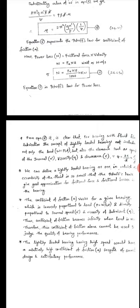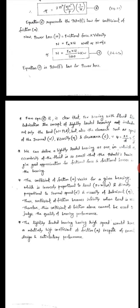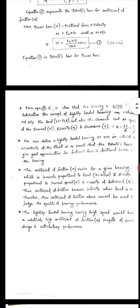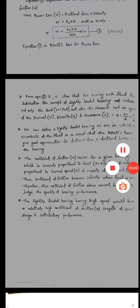Coefficient of friction mu varies for one bearing, which is inversely proportional to the load and directly proportional to the journal bearing speed N dash and viscosity of lubricant. This coefficient of friction becomes infinity when the load is zero, therefore this coefficient of friction alone cannot be used to judge the quality of bearing performance. Light load bearings with high speed will have a slightly high coefficient of friction mu in spite of correct design and satisfactory performance.